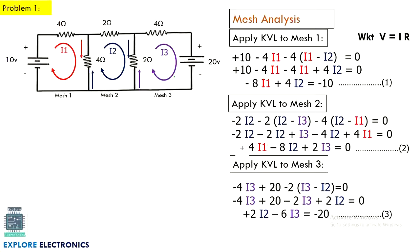We can use any mathematical method which is going to give I1, I2, I3, or we can use a scientific calculator. In the scientific calculator, solve these equations and we can obtain what is I1, I2, and I3. Let us see that.